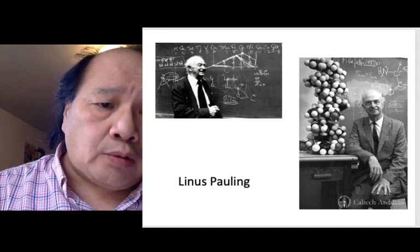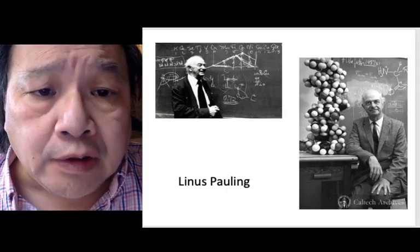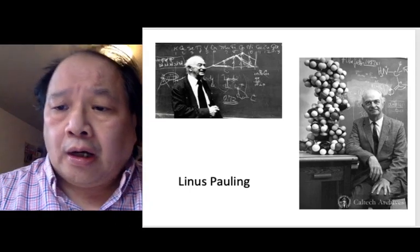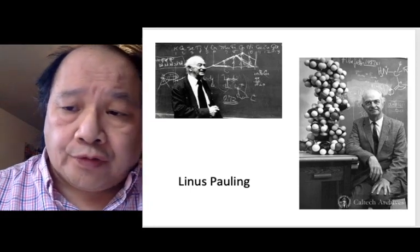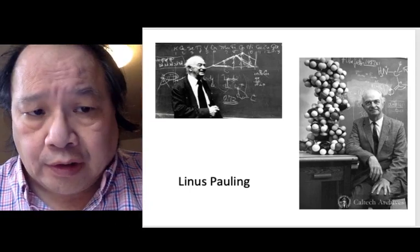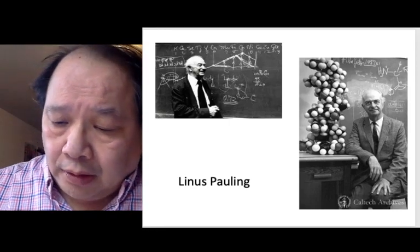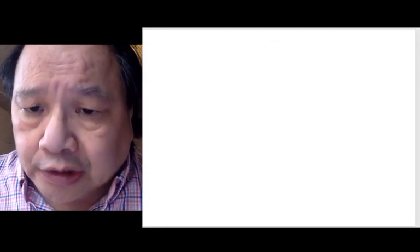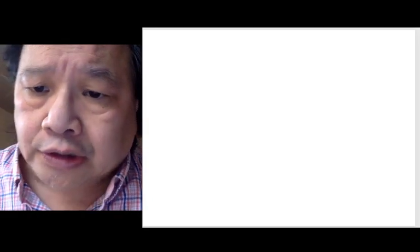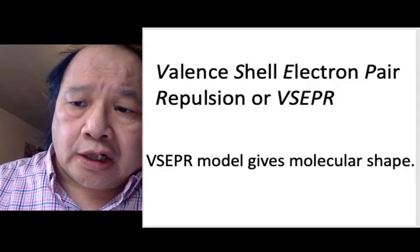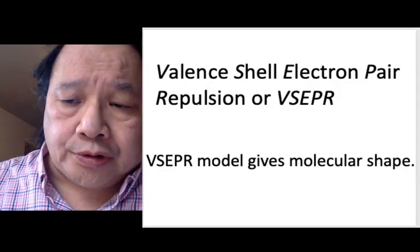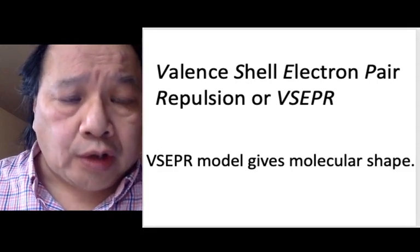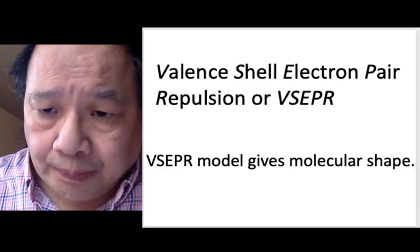Consequences from quasicrystals — the picture on the left is a theory of magnetism that he created. On the right, he started the field of protein folding; he discovered the alpha helix. That's one gentleman. The second scientist I'd like to talk about is in conjunction with valence shell electron pair repulsion, or VSEPR, which is the model we use to uncover molecular shape.